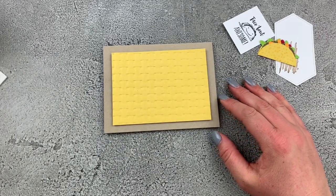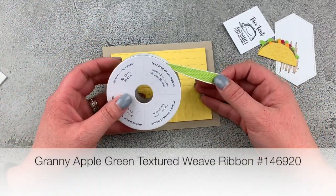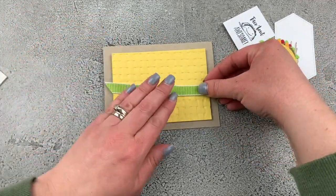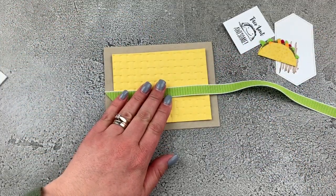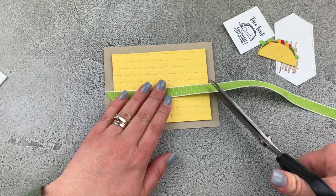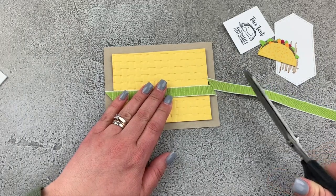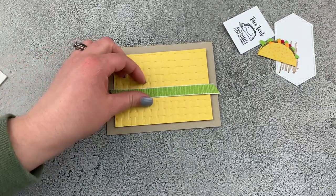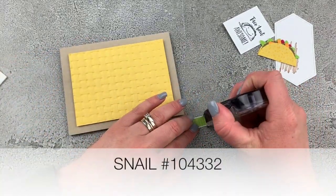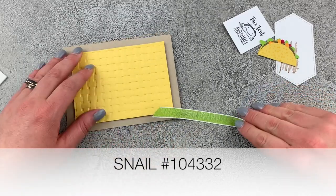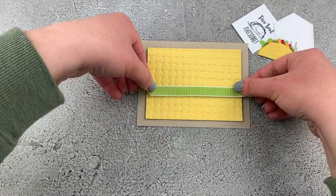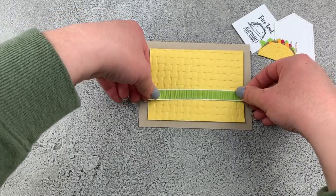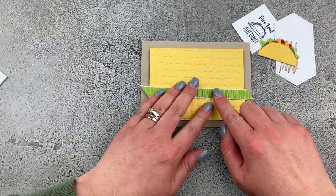Next, I'm going to add some of the Granny Apple Green textured weave ribbon. I'm just going to take a little length of it, cut it to size, and then I'll adhere it to the front. I'm just going to put a little bit of snail adhesive on the backside here and put that in place.